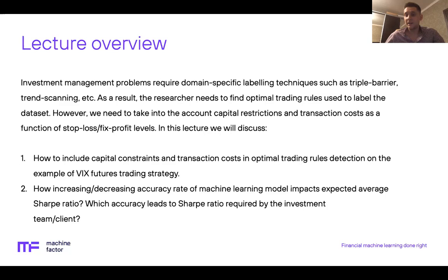If we label our dataset with triple barrier labeling using tight fixed profit and stop loss levels, the system will commit lots of small trades with a relatively small average gain and loss, and the average position holding time will be quite low. In this case, we will be able to allocate more capital to each individual signal. On the other hand, if we generate the dataset using wider fixed profit and stop loss, we will have lots of overlapping signals and consecutive bets, and we need to somehow spread our capital between currently active signals when we detect optimal trading rules.